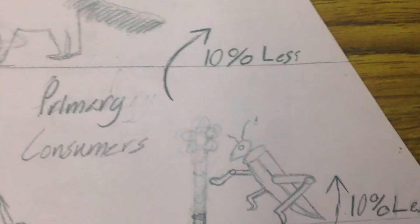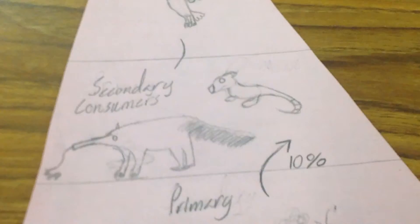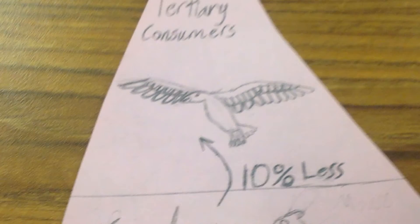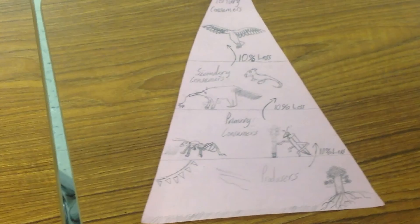And from the crickets and from the ants, it goes to the ant-eater and the mice, which is 10% less again. After that, it goes to tertiary consumers, 10% less overall.